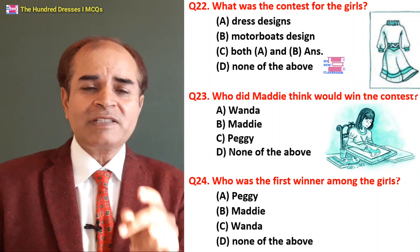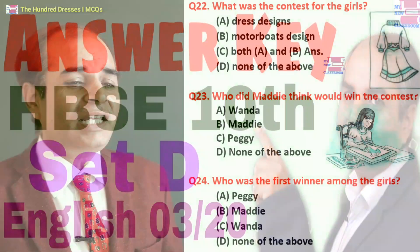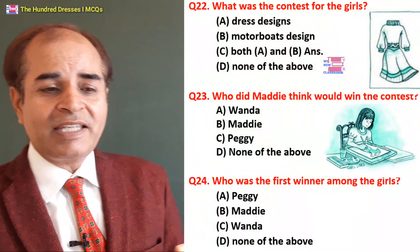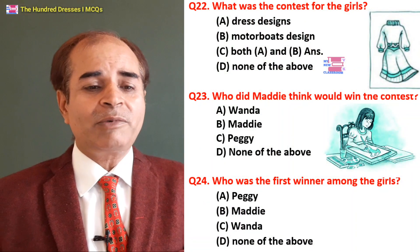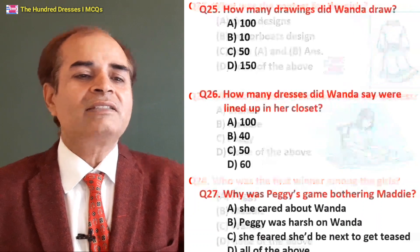Twenty-fourth question: Who was the first winner among the girls? Peggy? It seemed like it would be Peggy, but it didn't happen. Maddy? No. Wenda? Yes. None of the above? Wrong. C — Wenda is the right answer.